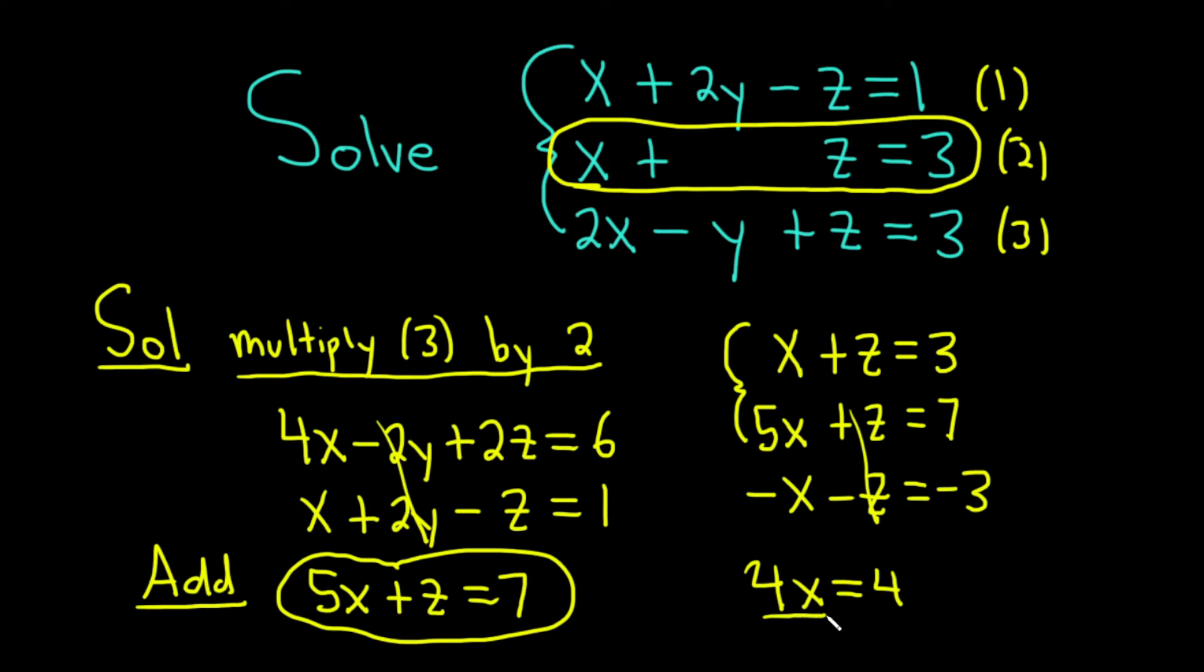And this is where things get really good because we can divide by 4. And we see right away that x is equal to 1. I'm going to put that in a box because that's an accomplishment, right? We found one of our variables.